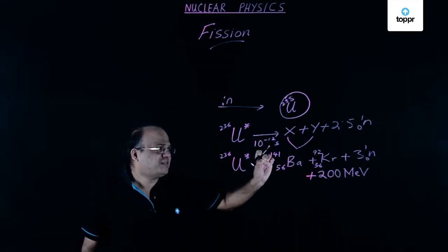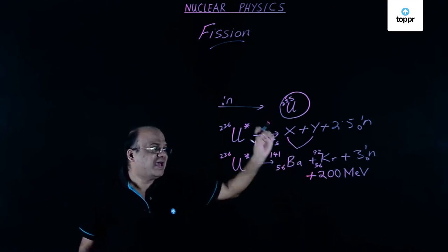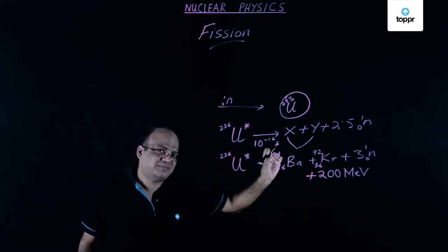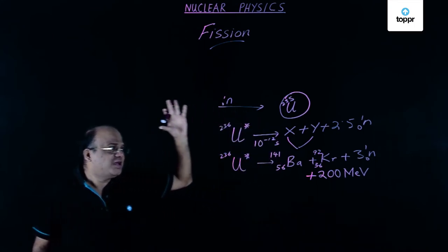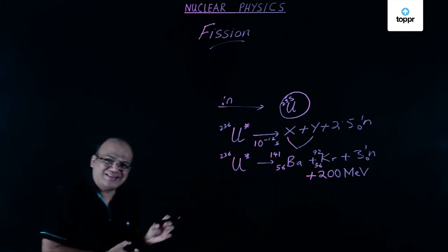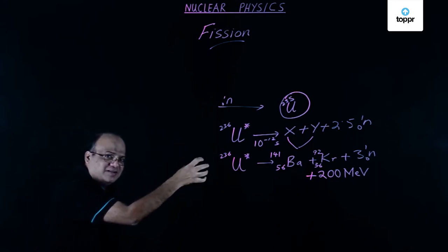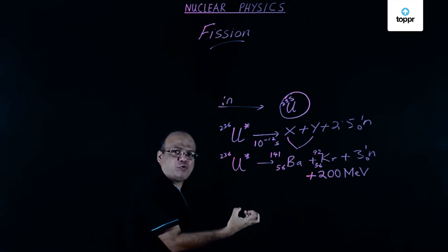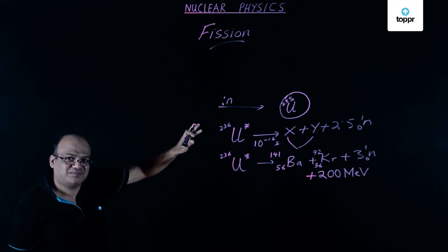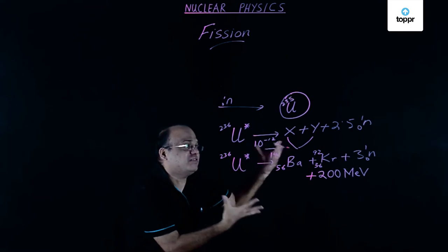Because neutrons are produced in this reaction and a neutron is required to start the reaction, we can have a chain reaction. We put in one neutron, start the reaction, and from that reaction we get an average of 2.5 neutrons — sometimes 2, sometimes 3 — which can cause 2 to 3 more reactions, and so on.